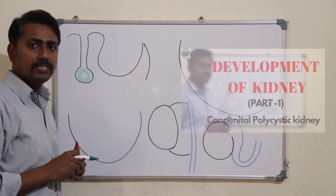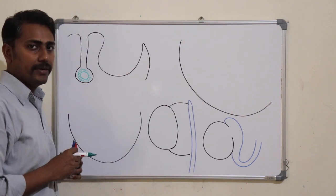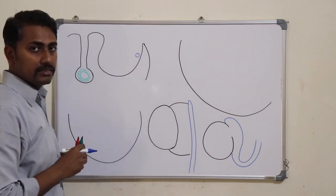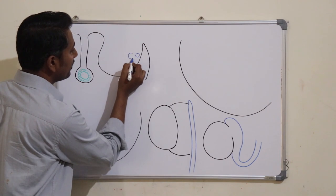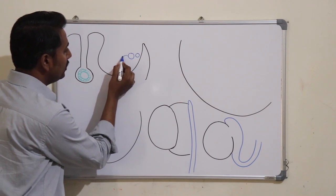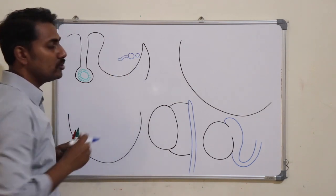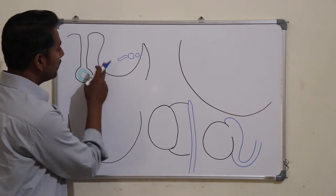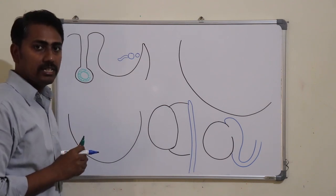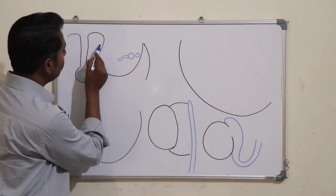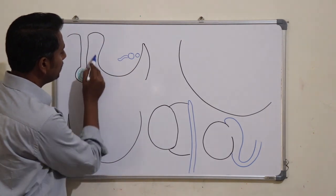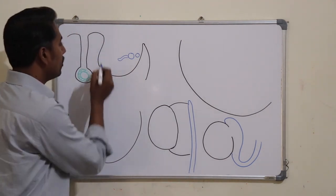As seen in the previous video on development of the kidney, four structures appear in the nephrogenic cord: the paramesonephric duct, which is the most lateral; medial to it, the mesonephric duct; connecting with the mesonephric duct are the small mesonephric tubules which form the mesonephros; and the most medial structure is the genital ridge, formed by the thickening of the pseudomyel epithelium covering it.